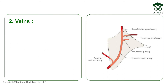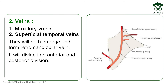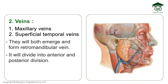Corresponding to the arteries, the veins within the gland are the superficial temporal vein and the maxillary vein, which unite to form the retromandibular vein — so named because it lies behind the mandible. The retromandibular vein then divides into anterior and posterior divisions.